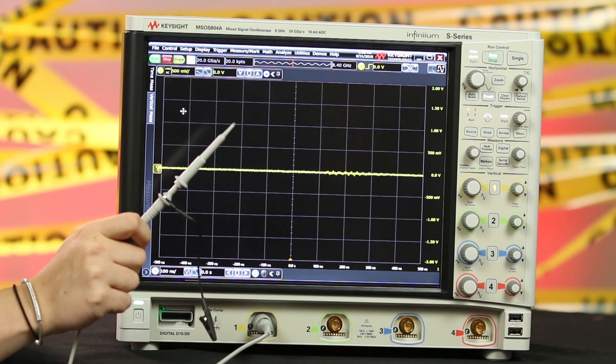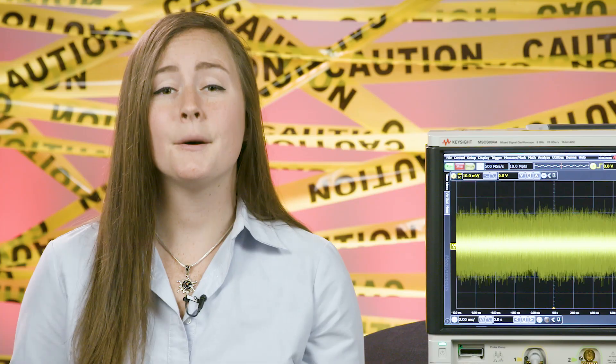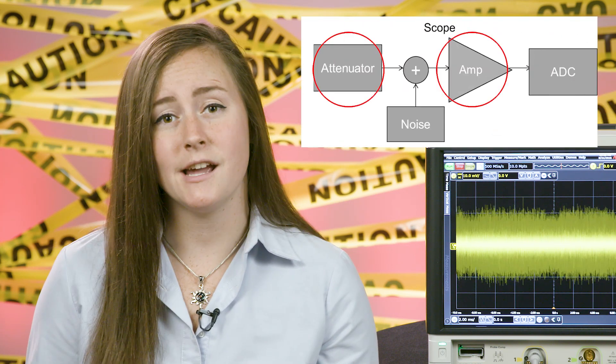So first things first, what is this noise and where is it coming from? Well, some of it's actually coming from the oscilloscope and probe that you need to use to measure your signal. You'll see this on every scope from every vendor. It's unavoidable and it's called random noise. It comes from the technology that's used in the scope's front end, the attenuator and the amplifier.